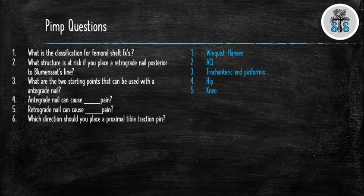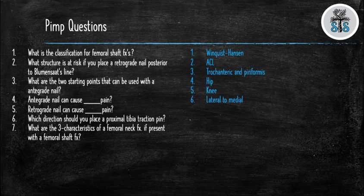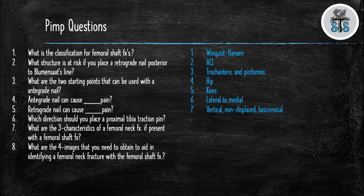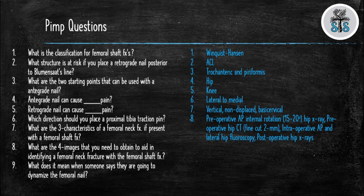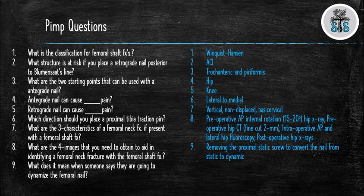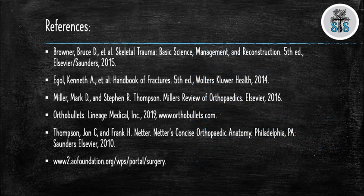Question 6: Which direction should you place a proximal tibial traction pin? Lateral to medial. Question 7: What are the three characteristics of a femoral neck fracture if present with a femoral shaft fracture? Vertical, non-displaced, and basal cervical. Question 8: What are the four images needed to identify a femoral neck fracture with a femoral shaft fracture? A preoperative internal rotation AP x-ray of the hip, preoperative fine-cut CT scan of the hip, intraoperative AP and lateral of the hip, and postoperative x-rays of the hip. Question 9: What does it mean to dynamize the femoral nail? Removing the proximal static screw to convert the nail from static to dynamic. Question 10: What is the incidence of femoral neck fractures with femoral shaft fractures? 2 to 6 percent.